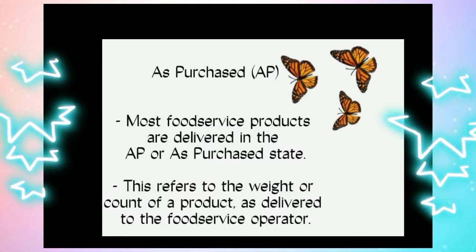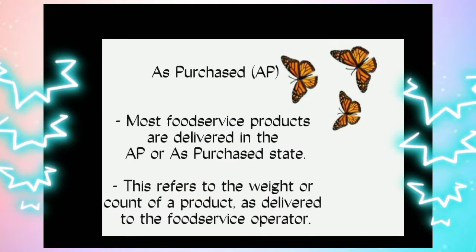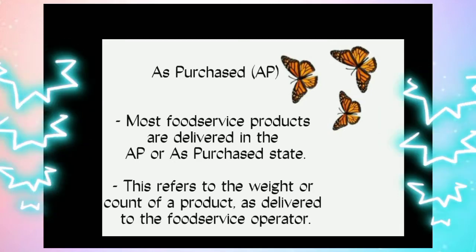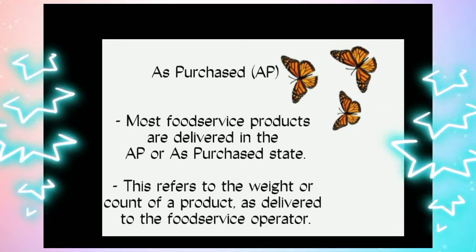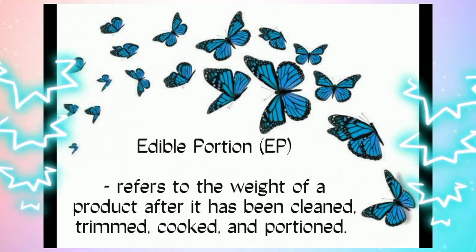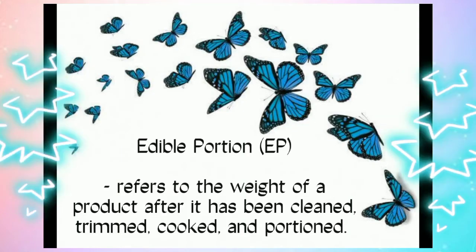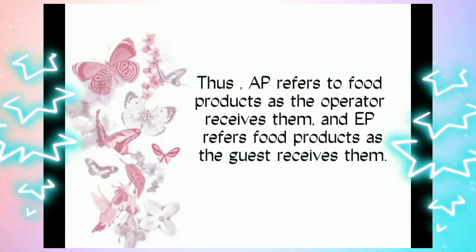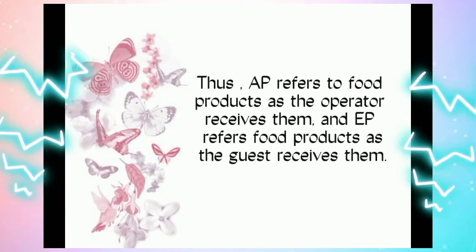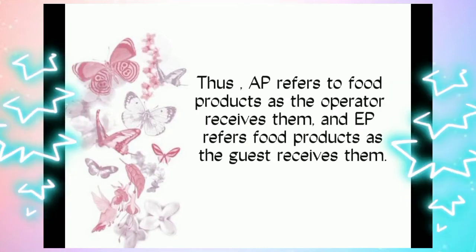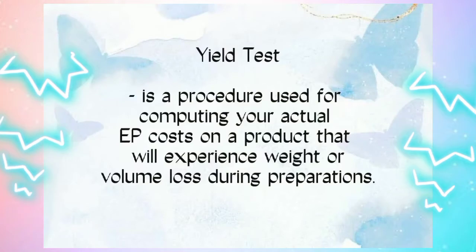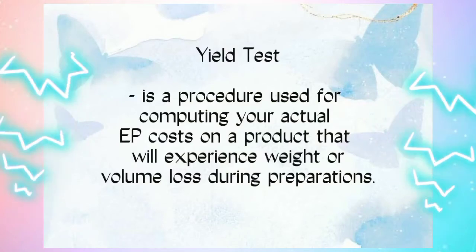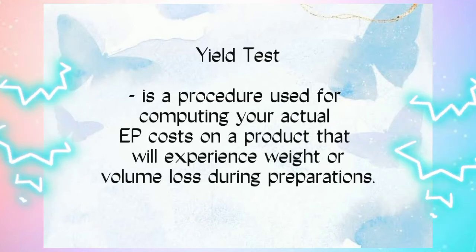As purchased (AP): most food service products are delivered in the AP, or as-purchased, state. This refers to the weight or count of a product as delivered to the food service operator. Edible portion (EP) refers to the weight of a product after it has been cleaned, trimmed, cooked, and portioned. Thus, AP refers to food products as the operator receives them, and EP refers to food products as the guest receives them. A yield test is a procedure used for computing your actual EP cost on a product that will experience weight or volume loss during preparation.